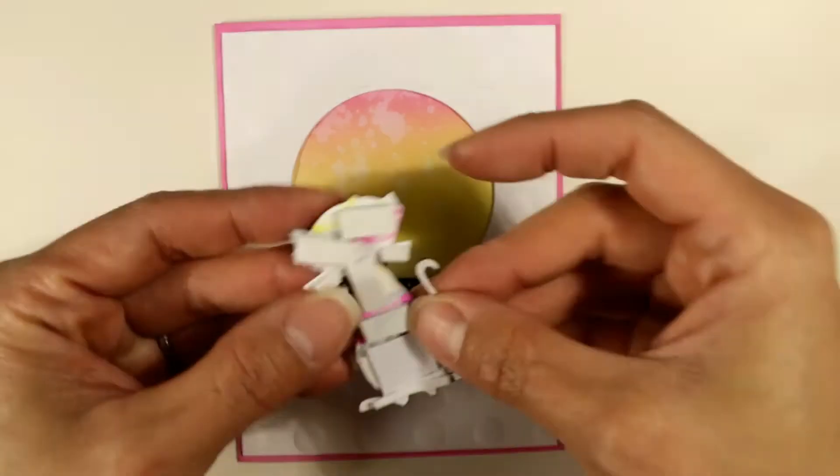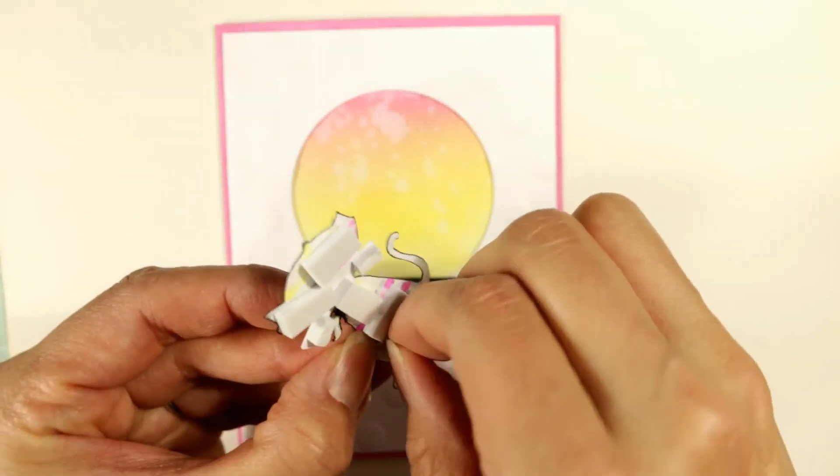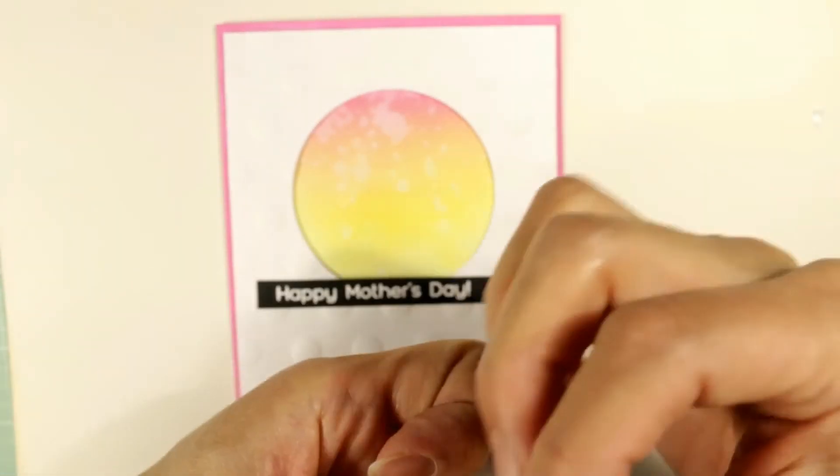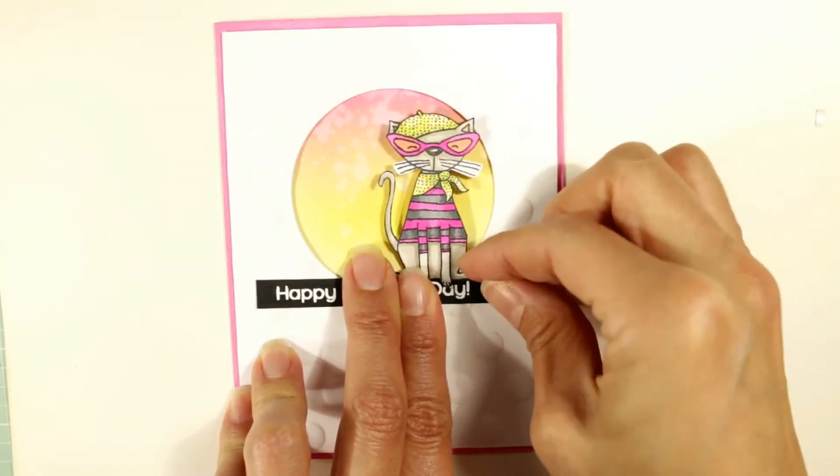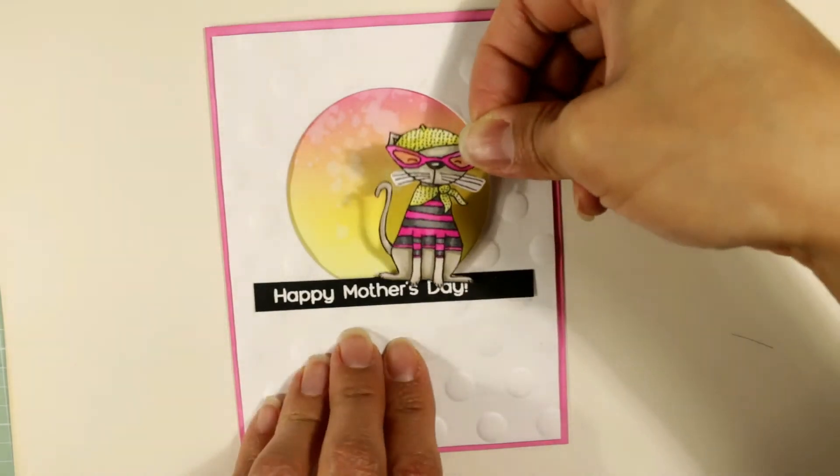I'm just gluing that right into place and I've put double-sided foam dots onto the back of this little kitty. It's just so that she has even more dimension than the card front bubble frame.